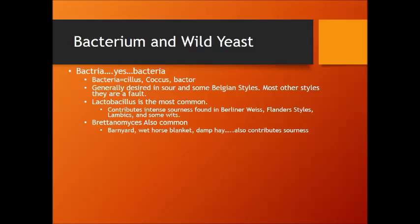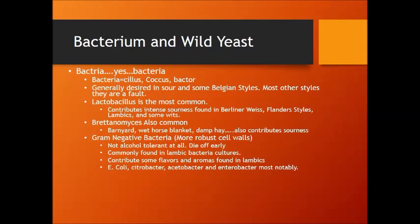Brettanomyces is a type of wild yeast that is also becoming very popular. It usually imparts a barnyard, wet horse blanket, damp hay, or goaty type of aroma and also contributes some sourness. Lacto and Brett are usually used in conjunction with each other, especially in lambic styles. Gram-negative bacteria, which typically have more robust cell walls, are not very alcohol-tolerant and tend to die off fairly early. They're commonly found in lambic bacteria cultures, which contain many different strains of bacteria and wild yeast.